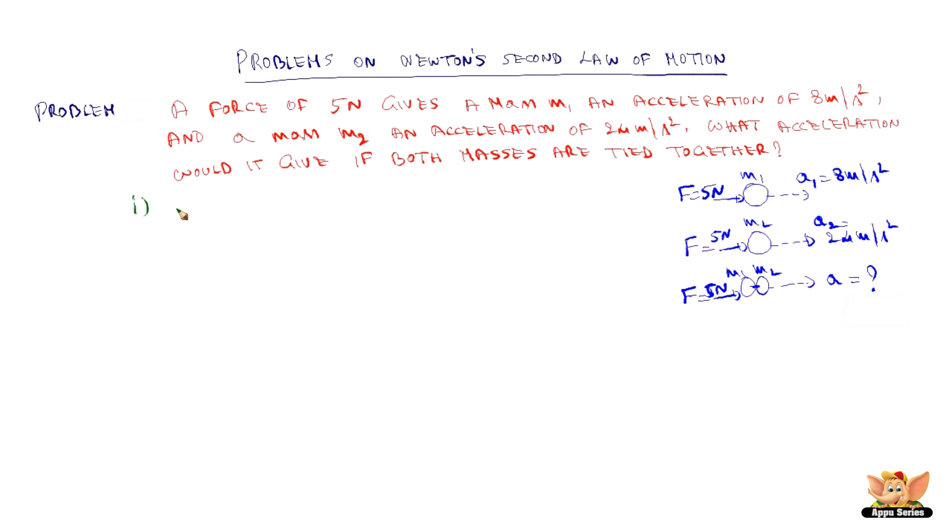So let us go to the first part of the question to find m1. So F is 5 Newton and A1 is 8 meter per second square. We know that F is equal to m1 into A1, which means 5 is equal to m1 into 8, so mass is equal to 5 by 8 kg.